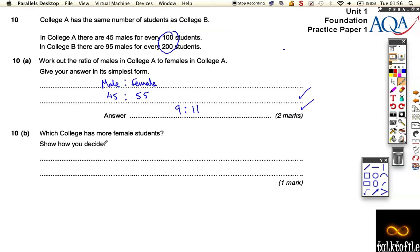If we look at College A, well we're going to have to double that to get that 200. It's easier to double this than to half this. So it's going to be 90 males, and that means 110 females every 200 students.